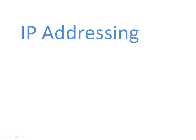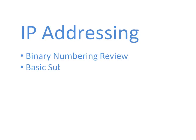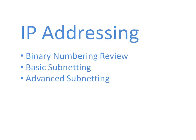Welcome back everyone, it's Kevin Wallace. This is our fourth of four videos focusing on IP addressing. We started out with a binary numbering review, understanding how to convert between binary and decimal. We followed that up with a basic subnetting video where we learned how to do a bit of design, creating a subnet mask to accommodate a certain number of subnets or hosts. In the advanced subnetting video we answered the question: what are those networks and their address ranges? We're going to wrap things up with an introduction to IP version 6. Up till now we've been focusing on the most widely deployed type of IP addressing: IP version 4.